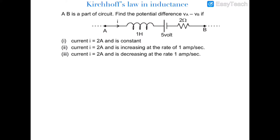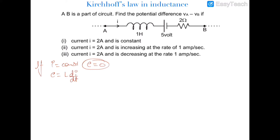The first case is that the current is 2 ampere and it is constant. We know that if current is constant — this is solution one — then the EMF across the inductor would be zero, because EMF across inductor is given by L dI/dt with the negative sign. Since I is constant, dI/dt is zero. In Kirchhoff's law we always write the EMF across all the elements of the circuit.